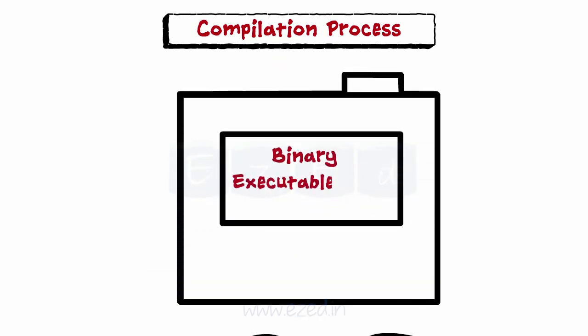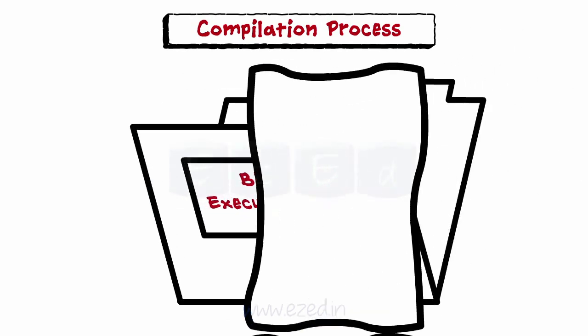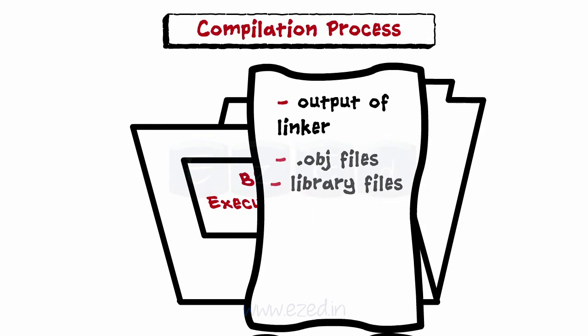Lastly, binary executable files are produced as the output of the linker. The linker links a number of .obj files with the library files to produce a binary file which is directly executable. These files have .exe as an extension.